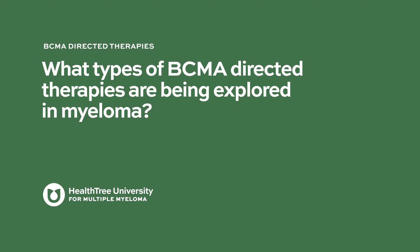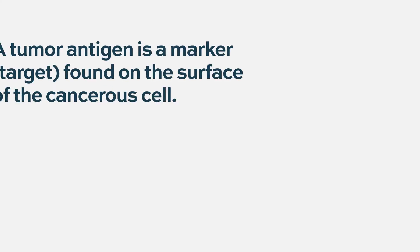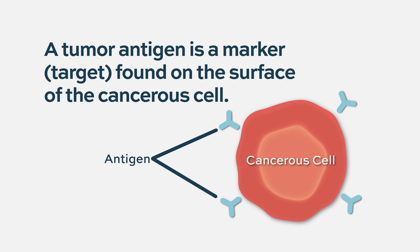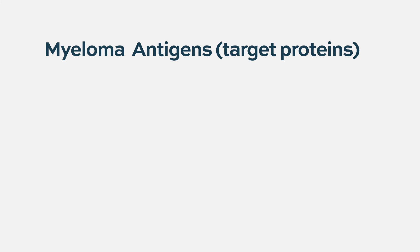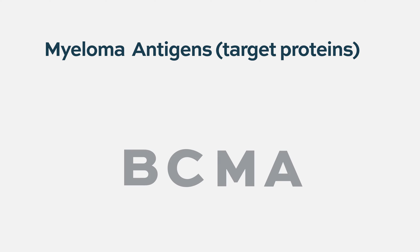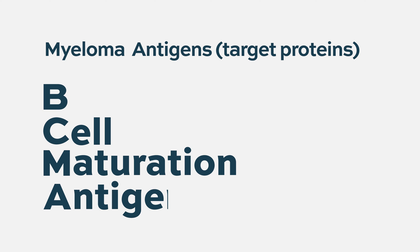What types of BCMA-directed therapies are being explored in myeloma? In cancer in general, when you would like to target the cancer cell, you have to identify what we call a tumor antigen, which is a marker that you can find at the surface of the malignant cell. When it comes to multiple myeloma, there are several tumor antigens. One very popular tumor antigen and target these days is BCMA, which stands for B-cell maturation antigen.